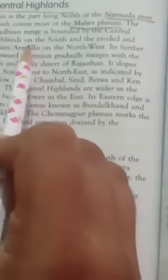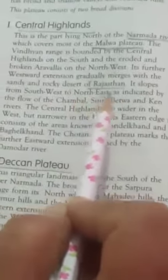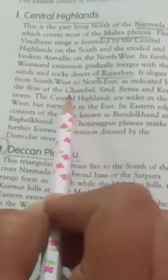The two broader divisions are Central Highlands and Deccan Plateau. The Central Highlands is the part lying north of the Narmada River which covers most of the Malwa Plateau. The Vindhyan Range bounds the Central Highlands on the south and the eroded and broken Aravalis on the northwest. Its further westward extent gradually merges with the sandy and rocky deserts of Rajasthan. It slopes from southwest to northeast as indicated by the flow of Chambal, Sind, Betwa and Ken rivers.